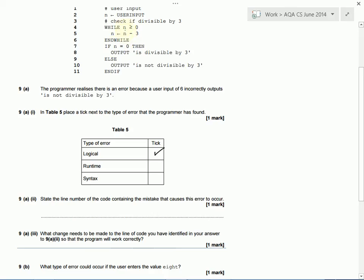Do we loop around again? Is minus 3 greater than 0? No, it's not. So we're going to stop. So if n equals 0, well it doesn't now because n is minus 3, so we do else output is not divisible by 3. So that's what's happening here. So there's two possible places where the mistake might be.